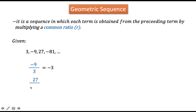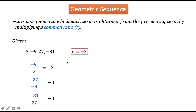27 divided by its preceding term, negative 9, the ratio is also negative 3. Similarly, negative 81 divided by 27 gives a ratio of negative 3. Notice that the ratio is common, so the common ratio of this sequence is negative 3, and since it has a common ratio, this is called a geometric sequence.